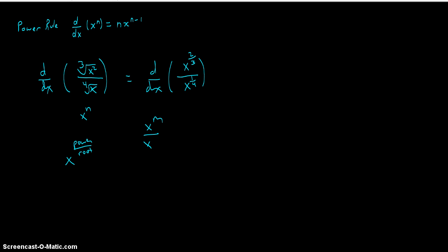And then if we have x to the m divided by x to the n, we can write that as x to the power m minus n, subtracting exponents. So in this example we're going to have to do 2 thirds minus 1 fourth. In order to do that subtraction, we need a common denominator which is 12. So multiplying 2 thirds by 4 over 4 gives us 8 twelfths, minus, and multiplying 1 fourth by 3 over 3 gives us 3 twelfths. So that's 5 twelfths.